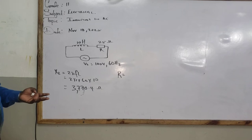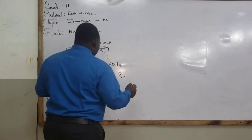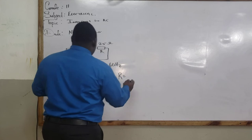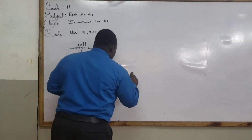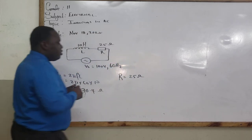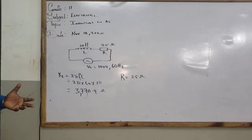So R is equal to what? We have our R right here. So our resistor provides 25 ohms to our circuit.